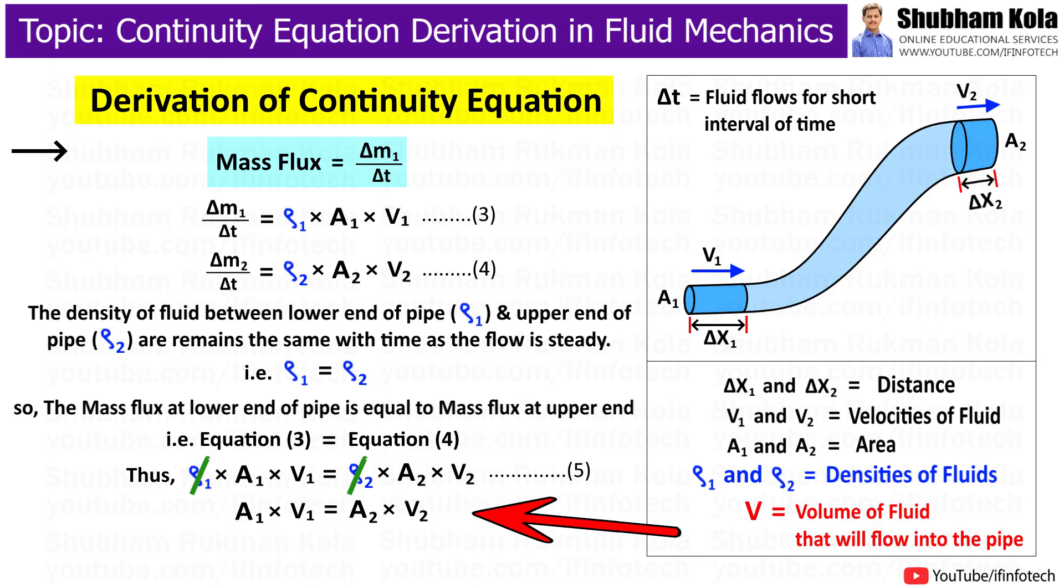Thus, the equation can be written as A1 V1 equals A2 V2. Now, this equation can be written in general form as Av equals constant. So this was the derivation of continuity equation.